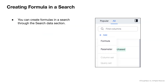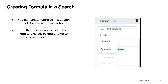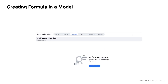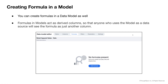You can create formulas in the search data section of ThoughtSpot. To do so, click add under the data source panel and select formula. You can also create formulas in data models as well. Formulas in models act as derived columns so that anyone who uses the model as a data source will see the formula as just another column.